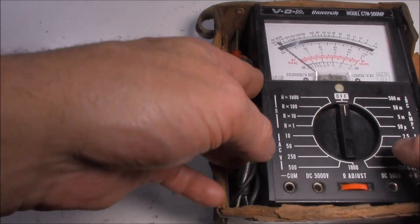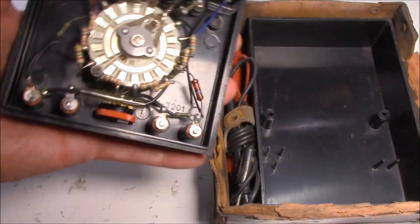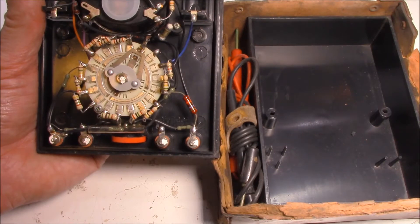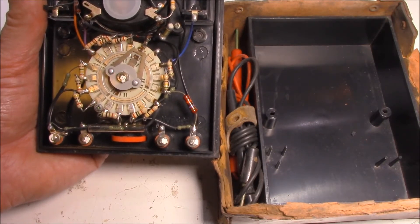Inside an analog meter, it's not unusual to find a maze of resistors. And that's what's used to create the varying measurements of voltage, current, and resistance.